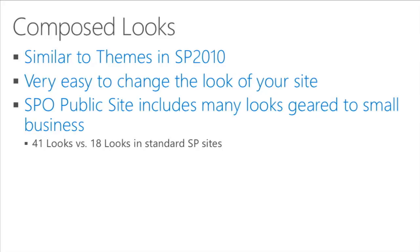In SharePoint 2007, themes almost required you to go in and change things on the server itself. SharePoint 2010 went the other direction — no server changes needed, but they took away a lot of flexibility. With composed looks in 2013, Microsoft really hit the sweet spot between the two, giving you the ability to pick themes with a lot more flexibility to make changes in a safe way.